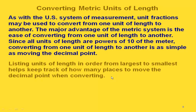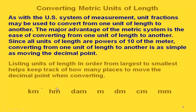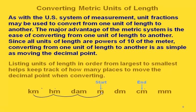The best way to remember how to do metric conversions is to write units of length in order from largest to smallest: kilometer, hectometer, decameter, meter, decimeter, centimeter, millimeter. For example, converting from kilometers to meters means going three steps to the right, so we move the decimal point three places to the right. Converting from meters to centimeters means going two steps to the right, so we move the decimal point two places to the right.